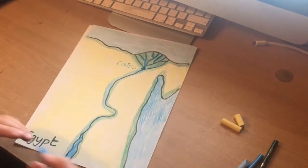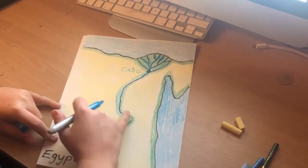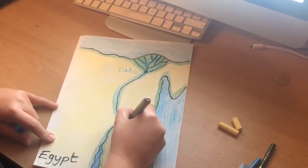And then we're going to add on another large city which is just on the little loop of the Nile there, and that is going to be Luxor.